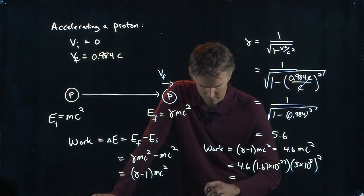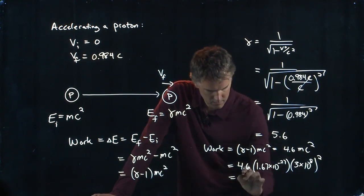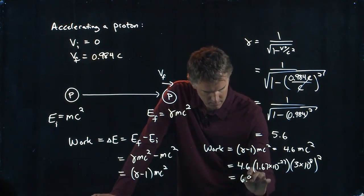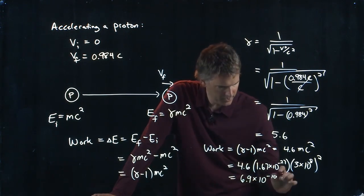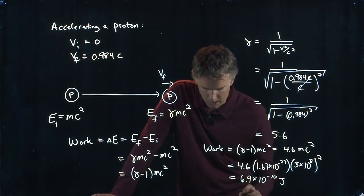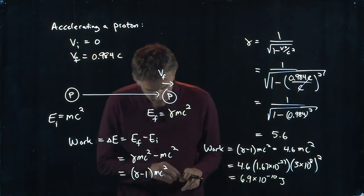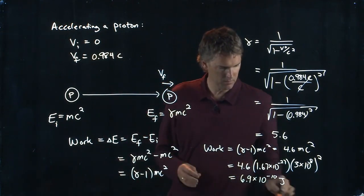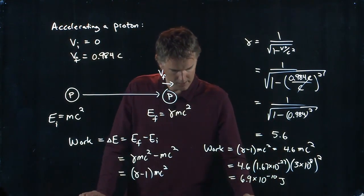And if somebody gets a number, shout it out. 6.9 times 10 to the minus 10. 6.9 times 10 to the minus 10. And we're in SI units, so that should be joules. And that's what I get here on Wolfram Alpha.